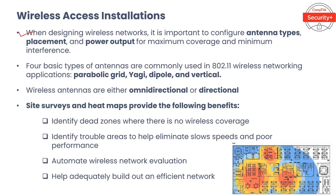When designing wireless networks it is important to configure antenna types, placement, and power output for maximum coverage and minimum interference. There are four basic types of antennas commonly used in 802.11 wireless networking: parabolic grid, Yagi, dipole, and vertical. Wireless antennas are either omnidirectional or directional. An omnidirectional antenna provides a 360-degree radial pattern for the widest possible signal coverage — the type commonly found on an AP.